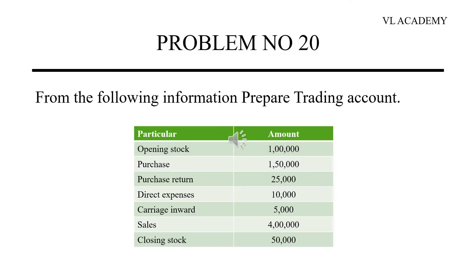In the problem, from the following information, prepare a trading account. The items given are: opening stock, purchases, purchase return, direct expenses, carriage inward, sales, and closing stock.